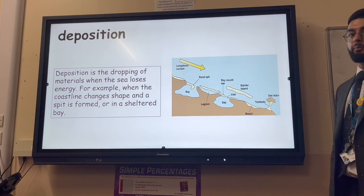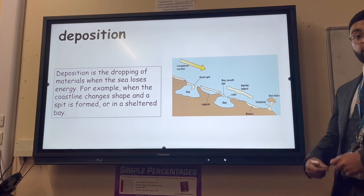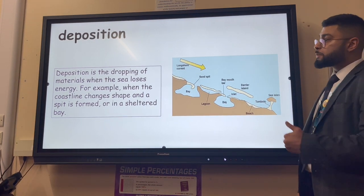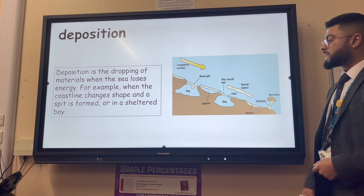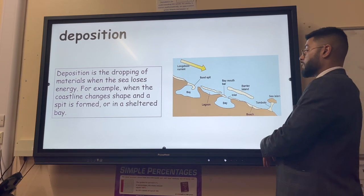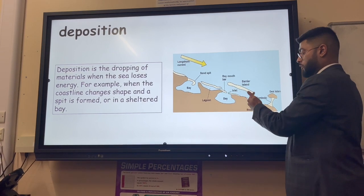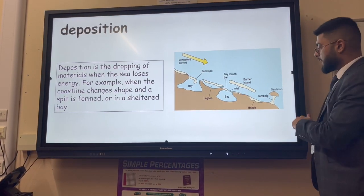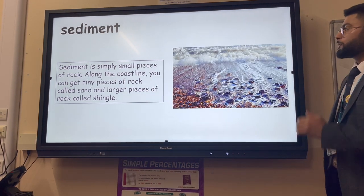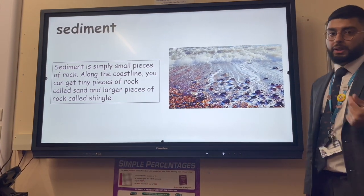Deposition happens when the sea loses energy and drops what it's carrying. Think of someone carrying books until they run out of energy and drop them. This can lead to changes in the shape of the coastal landscape - a spit can form, and if a spit connects two headlands a bar forms. If a spit connects the mainland to an island we call that a tombolo.